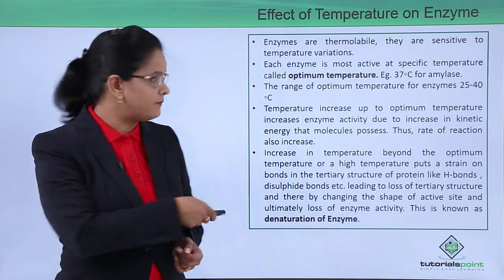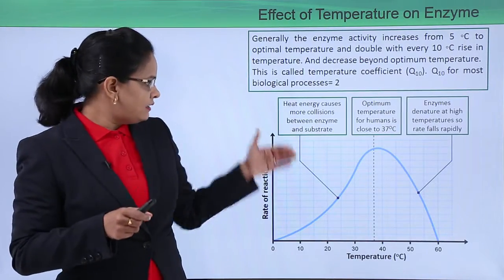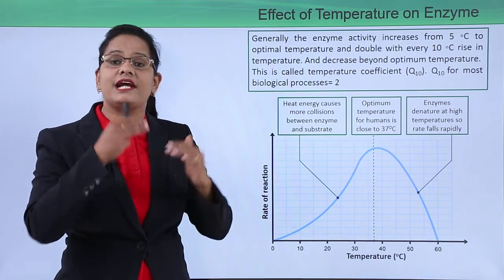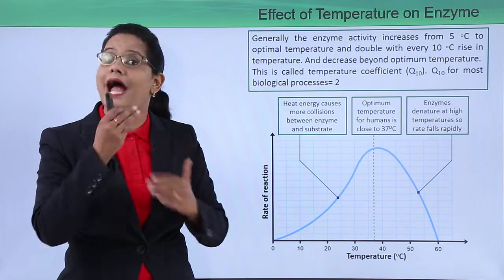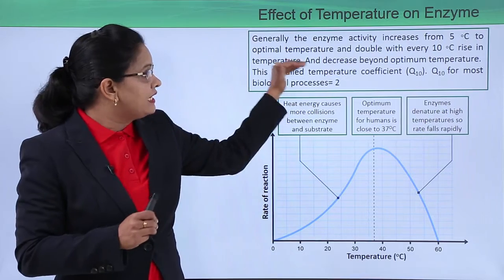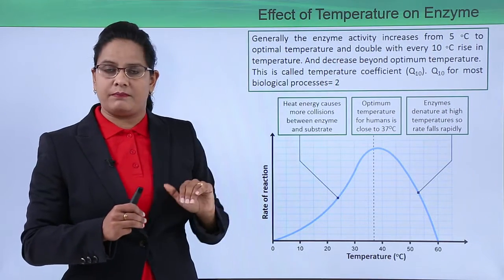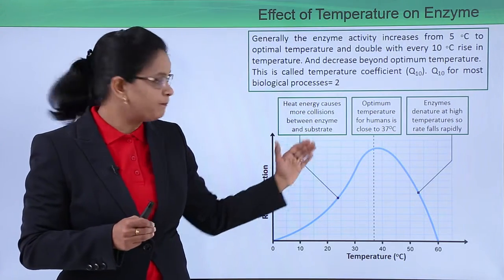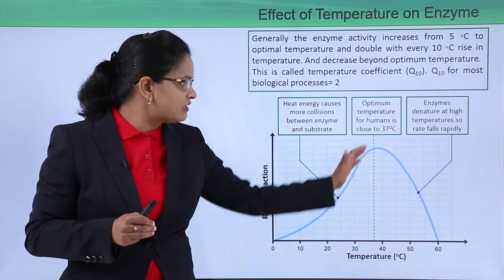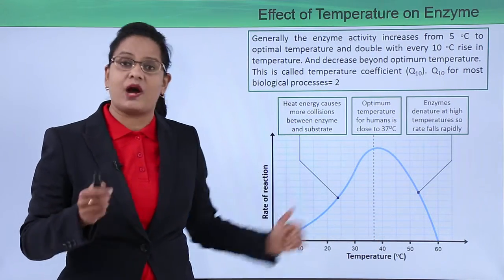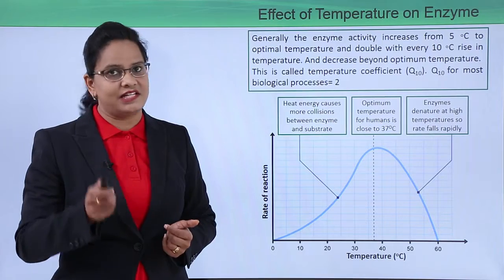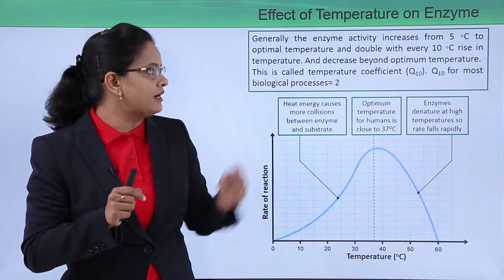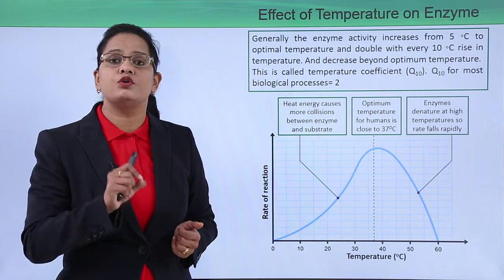Up to the optimum temperature, every 10-degree increase in temperature leads to an increase in enzyme activity, but activity decreases beyond the optimum temperature. For humans, the optimum temperature is 37 degrees Celsius. Beyond that, the rate of reaction decreases because the enzyme gets denatured. This range is known as the temperature coefficient or Q10, and for most biological reactions Q10 equals 2.